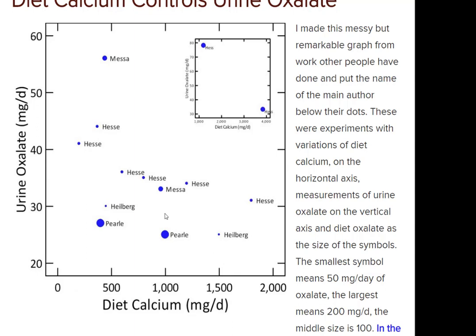So raising your diet calcium can lower your urine oxalate. And remember: dropping your diet sodium will drop your urine calcium. If you combine the two — drop the sodium first, then raise the diet calcium — you can keep the urine calcium down and keep the oxalate down. A wonderful combination.